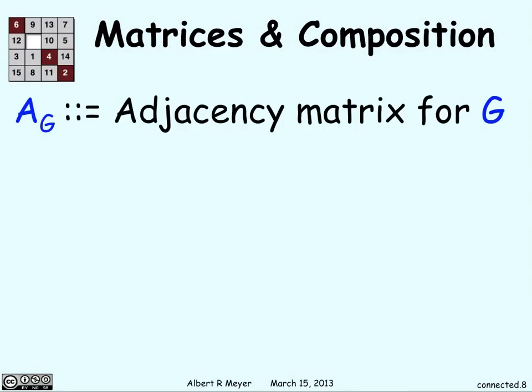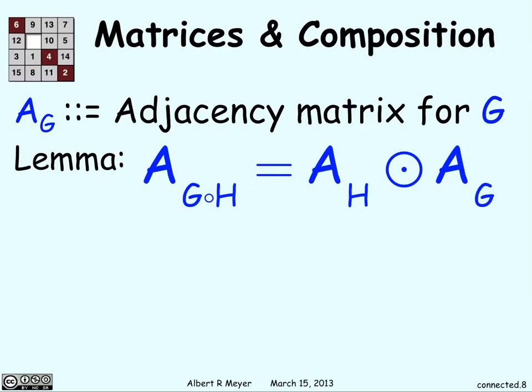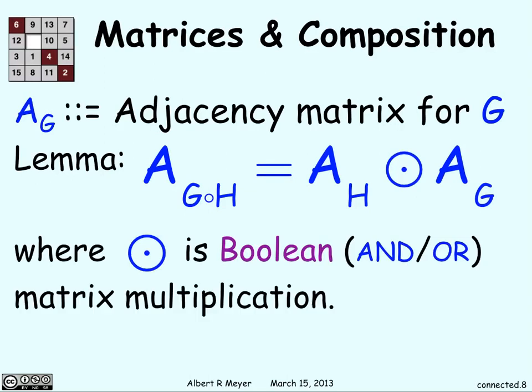Let's talk about composition of matrices. So if we have some adjacency matrix for g, and we do a composition with some h, then we can get that by applying this Boolean and-or matrix multiplication. These adjacency matrices are ones and zeros, so we do matrix multiplication, but with Boolean operations instead of pluses and multiplications.